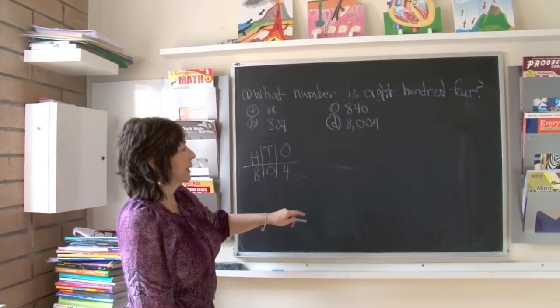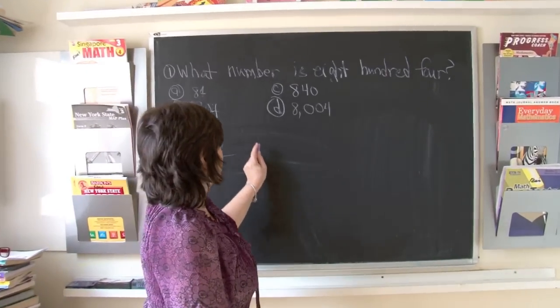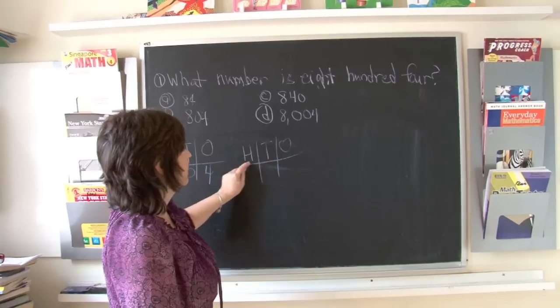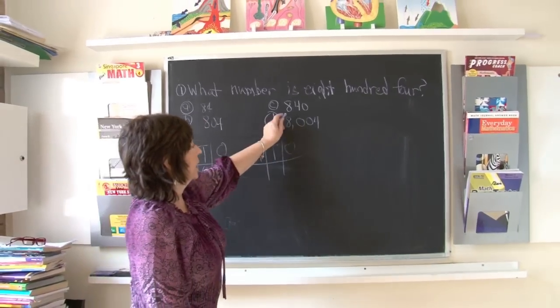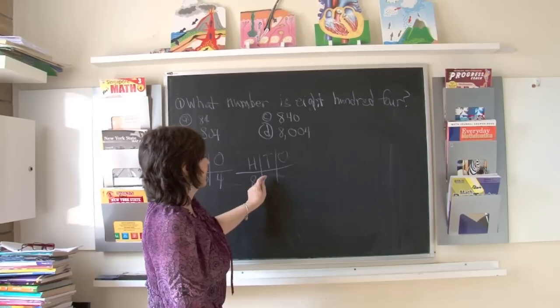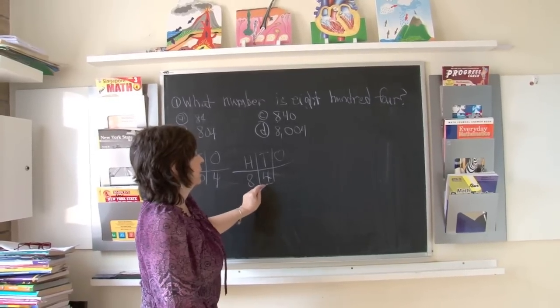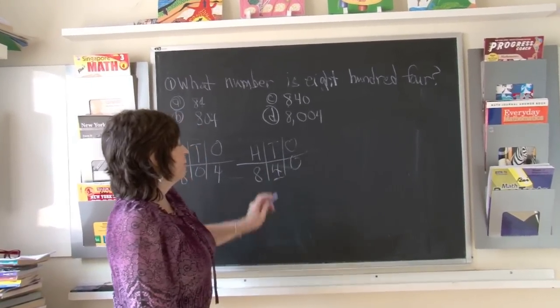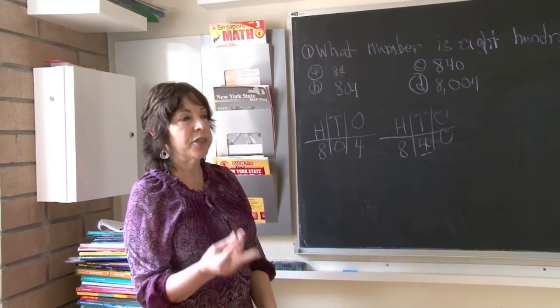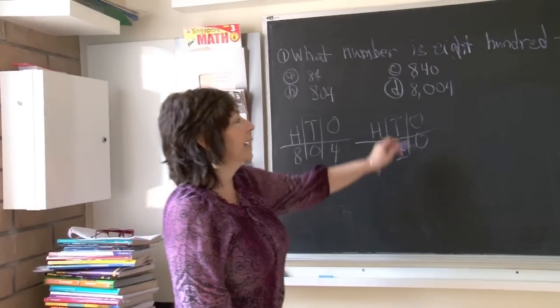If I was to look at C and again do hundreds, tens, and ones, it says—C says 840. The next number is in the tens column. And we read that four tens is 40: 10, 20, 30, 40. So that cannot be. 84 was an easy C.